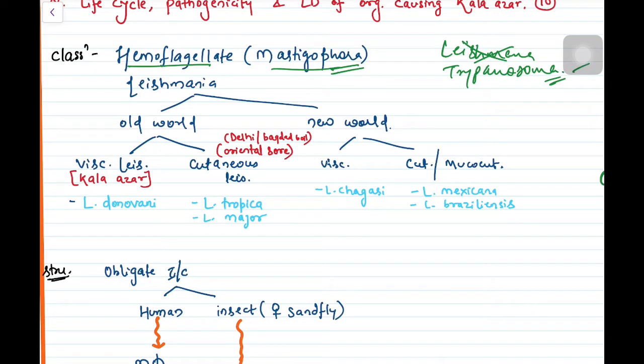Leishmania can be further divided into old world Leishmania and new world Leishmania. In old world, divide into visceral and cutaneous. In new world also visceral, cutaneous, along with mucocutaneous. Old world visceral leishmaniasis is the typical Kala-azar caused by Leishmania donovani. In new world, visceral is caused by Leishmania chagasi. For cutaneous, it's Leishmania tropica and major in old world, and Leishmania mexicana and braziliensis in new world.